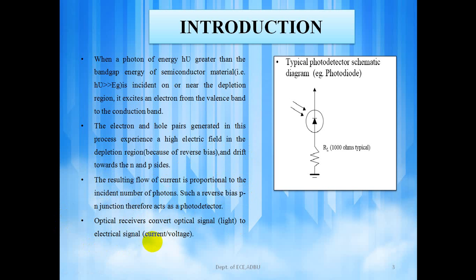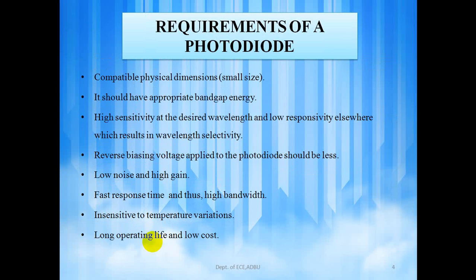Photodetectors are the fundamental elements of optical receivers followed by amplifiers and conditioning circuitry. The basic requirements of a photodiode are it should have a small size, it should have an appropriate bandgap energy, it should have very high sensitivity, reverse biasing voltage should be less, it should have low noise and high gain, fast response time and high bandwidth, it must have high tolerance with variation in temperature and it should be cost effective.